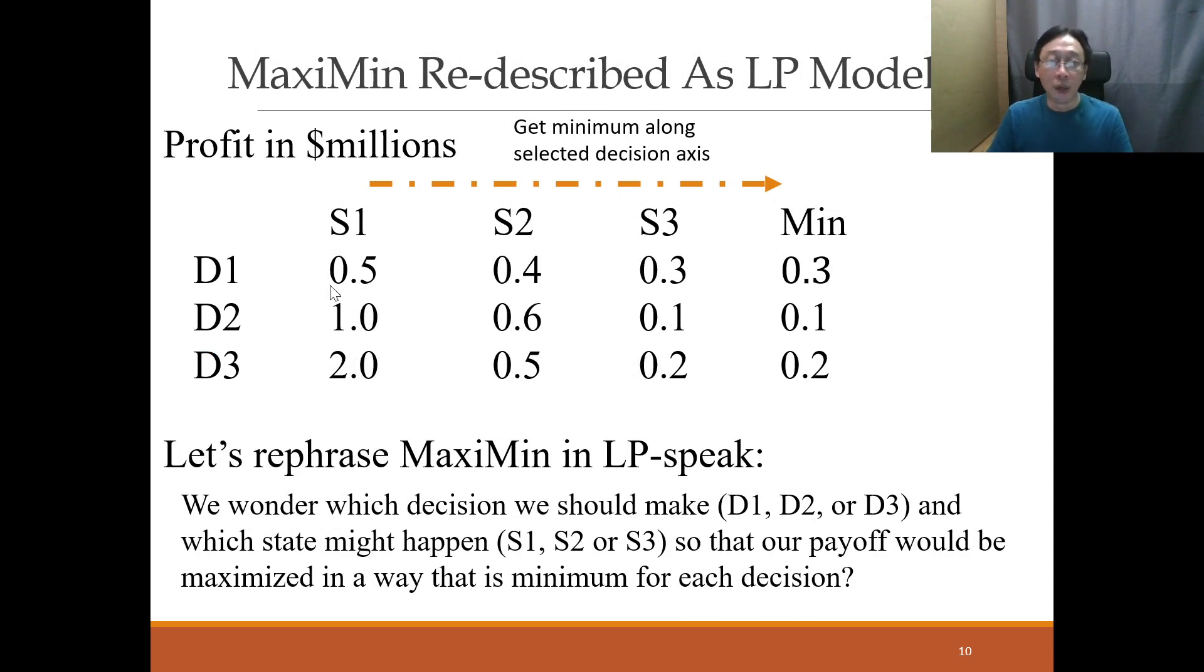Now let's come back to our decision problem in Maximin. So we are familiar with this part of the diagram. Let's rephrase Maximin in terms of LP language. We say we wonder which decision D1, D2 or D3 and which state of nature, because if we make decision D1, we might encounter low economy, medium economy, high economy S1, S2, S3. So which decision shall we make? And then upon which, what state of nature S1, S2 or S3 will we encounter such that our payoff will be maximized in a minimum for each decision? So in other words, how can we get the Maximin payoff in terms of using decision variables to describe which decision should we make and which state of nature shall we encounter in order to get this 0.3?